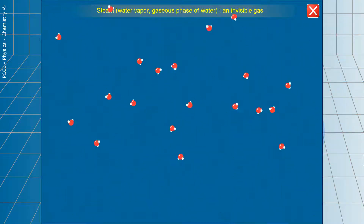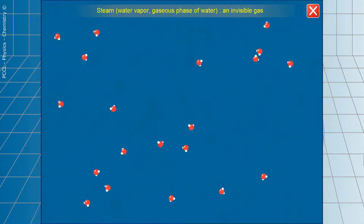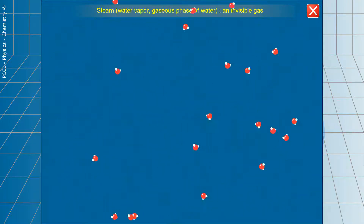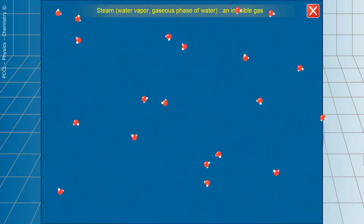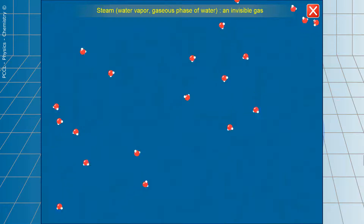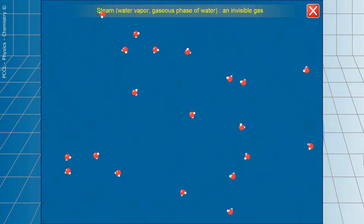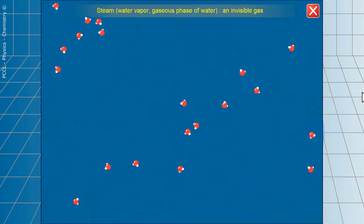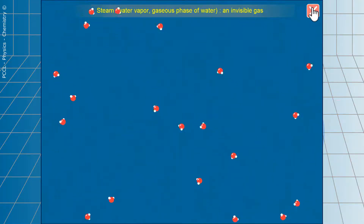If it is a fog, it is already the liquid state. If it is mist on a window, it is the liquid state. If we see something coming out of the mouth in winter when it is cold, it is water vapor in the throat — but as soon as it contacts the cold, it passes to the liquid state. The criterion is: if we can see it, it is the liquid state. Water vapor is an invisible gas.